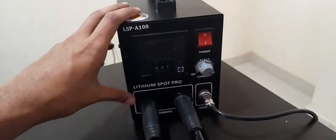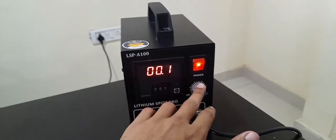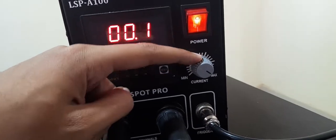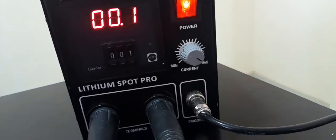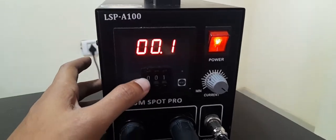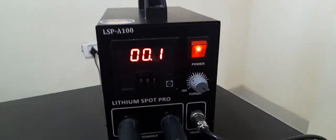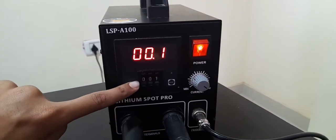Let me show you how the machine works. Just turn it on with the power switch over here. You have two things: one is the current control, which is set to maximum, and that is where most people would have to use it. Then we have the timer here, which decides how long the spot welding should happen. This is for current and this is for timer.